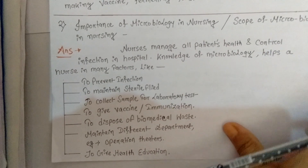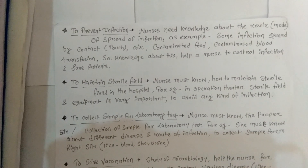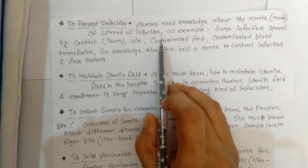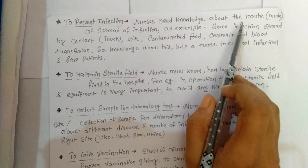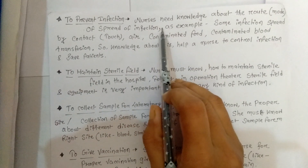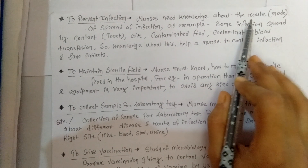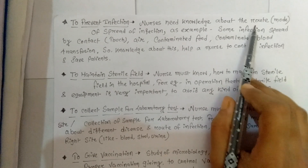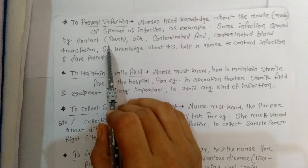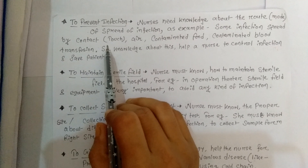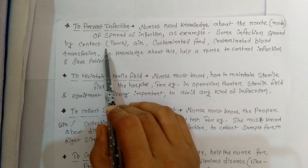The first point is to prevent infection. A nurse needs knowledge about the routes of spread of infection and how microorganisms are entering our body. For example, some infections spread by contact — right now COVID-19 can be spread by shaking hands with people, so health organizations are directing us not to shake hands and to do hand washing at least two or three times a day.